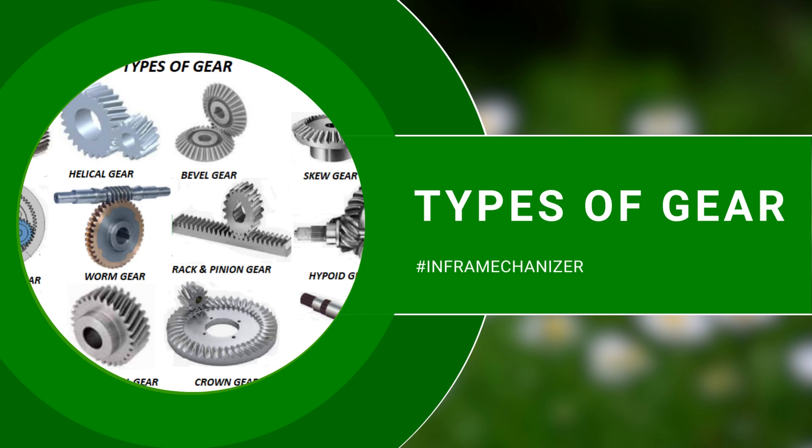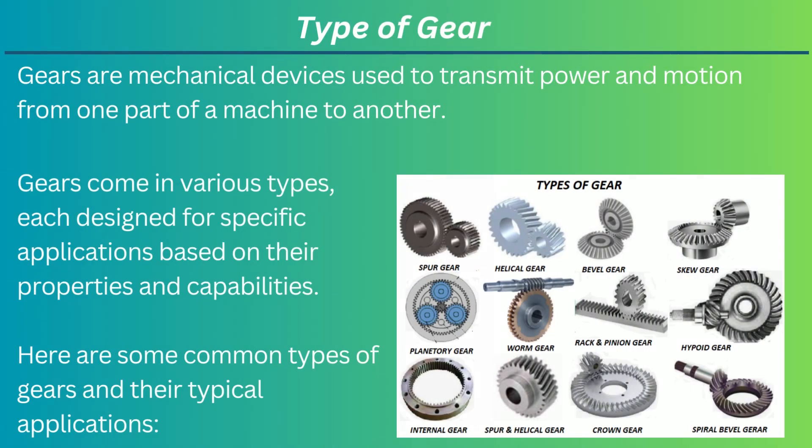Dear friends, this video discusses the types of gear, useful to professionals and technicians working in the construction industry. We'll start presenting now. Gears are mechanical devices used to transmit power and motion from one part of a machine to another. Gears come in various types, each designed for specific applications based on their properties and capabilities. Here are some common types of gears and their typical applications.